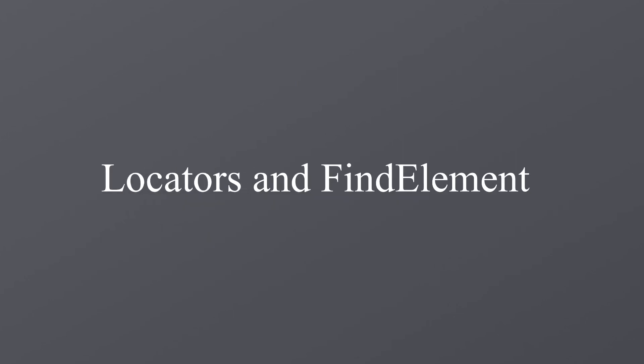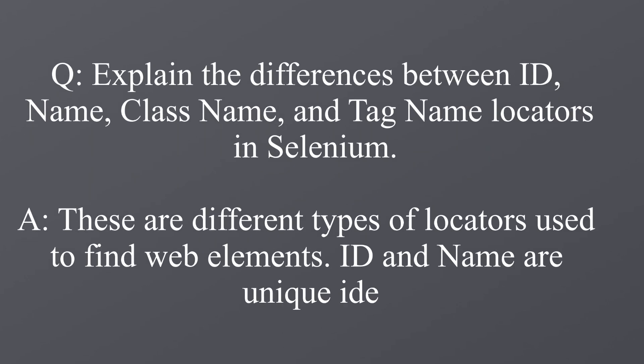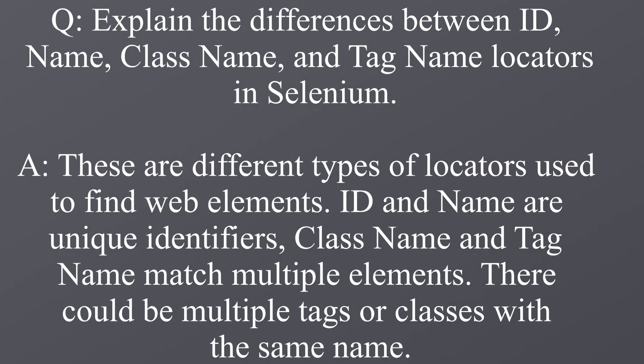Now let's get into locators and find element strategies. Explain the differences between ID, name, class name, and tag name locators in Selenium. These are all different types of locators used to find web elements. ID and name are unique identifiers, while class name and tag name can match multiple elements — there could be multiple tags or classes with the same name.